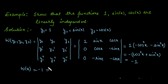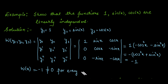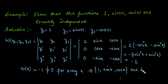Since W(x) = −1, this is not equal to 0 for any x — it is always nonzero for every x. Therefore, the functions 1, sin(x), cos(x) are linearly independent on any interval.